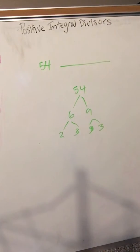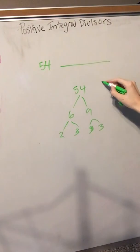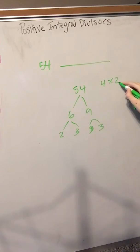So every time a prime number shows up, you add 1. So there's 1, 2, 3, 4 prime numbers. Do 4 times 2, and you get 8 as your answer.